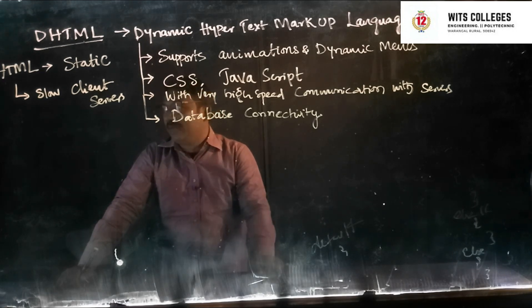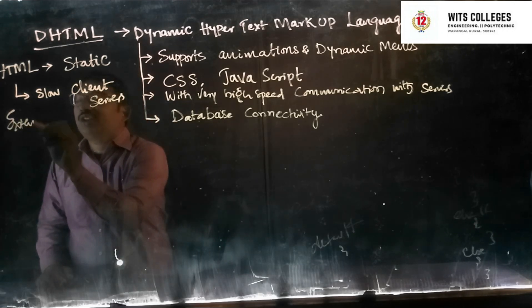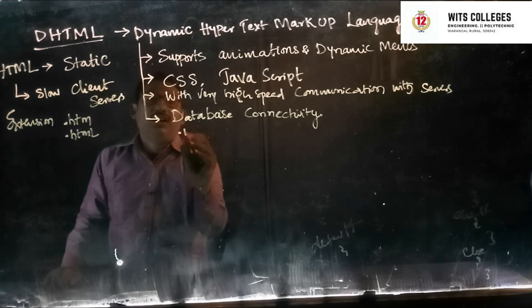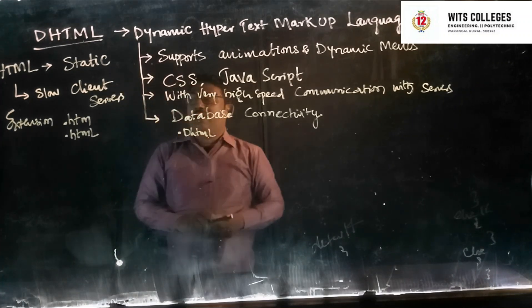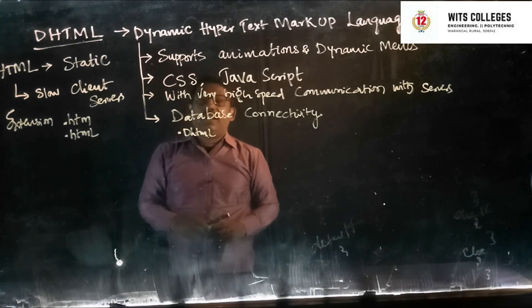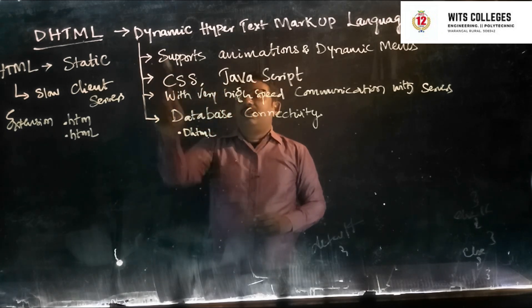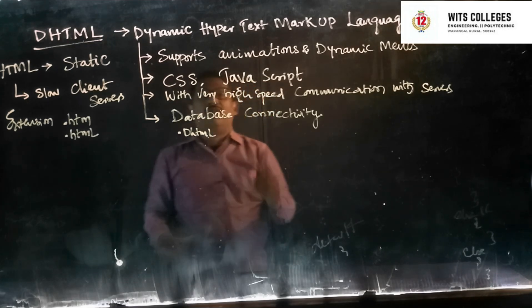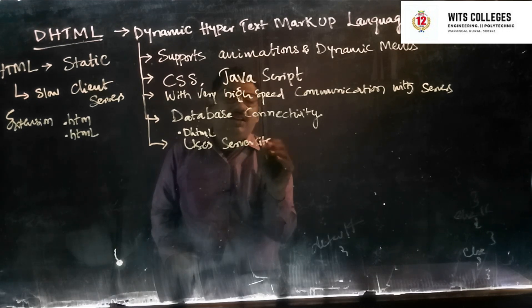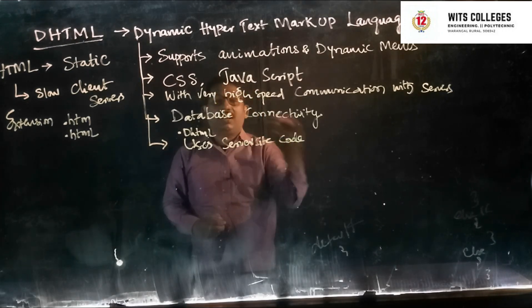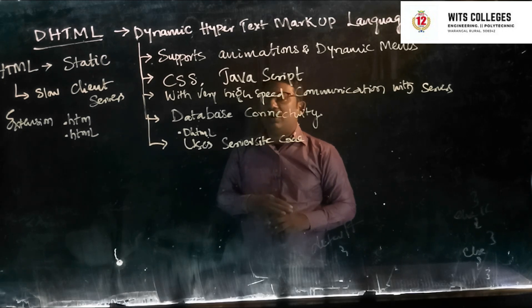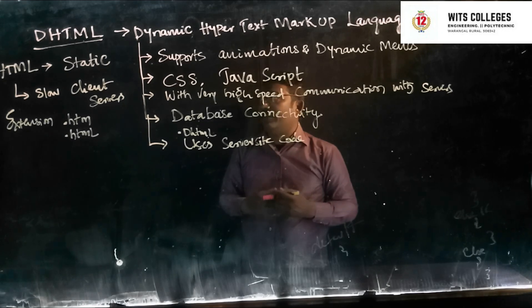The extension for HTML is .htm or .html, whereas the DHTML extension is .dhtml. DHTML uses server-side code whereas HTML does not. DHTML can communicate with the server and retrieve code, whereas HTML cannot share code with the server.